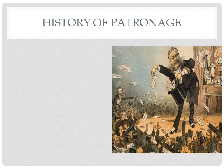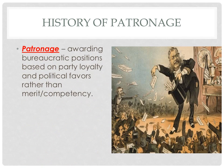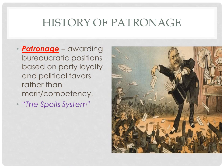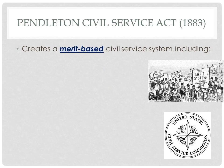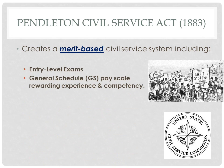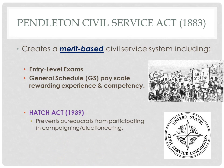Jobs within the bureaucracy were historically handed out as political gifts in a process known as patronage — awarding a bureaucratic job solely based on party loyalty or political favor and not on the merit or competency of the person, also referred to as the spoils system. Patronage officially came to an end with the passage of the Pendleton Civil Service Act in 1883, which created a merit-based civil service system overseen by the U.S. Civil Service Commission. It includes entry-level exams to get into a bureaucratic job and a general schedule pay scale that rewards people based on experience and competency. The Hatch Act in 1939 took things a step further by preventing bureaucrats from participating in campaigning or electioneering.